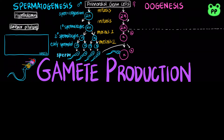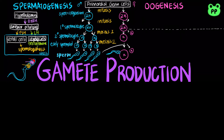In the hormonal control of the male reproductive system, the hypothalamus secretes gonadotropin-releasing hormone, which stimulates the anterior pituitary to secrete FSH or follicle-stimulating hormone and LH or luteinizing hormone. FSH promotes the activity of Sertoli cells, which nourish developing sperm and promote spermatogenesis. LH regulates Leydig cells, which secrete testosterone, which also promotes spermatogenesis.